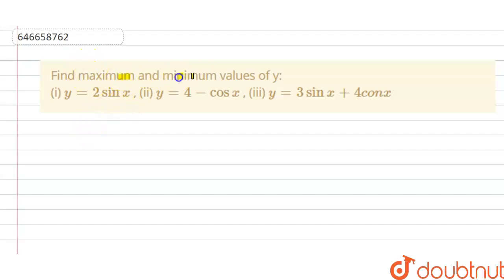Find maximum and minimum values of y. We have first part: y equals 2 sine x, second part: y equals 4 minus cos x, and third part: y equals 3 sine x plus 4 cos x.